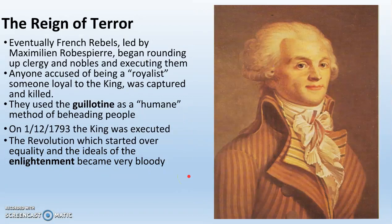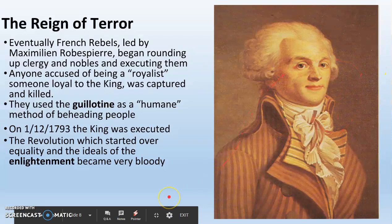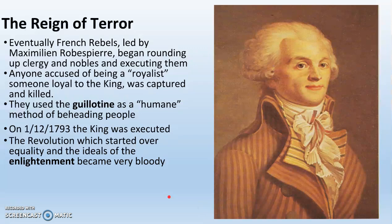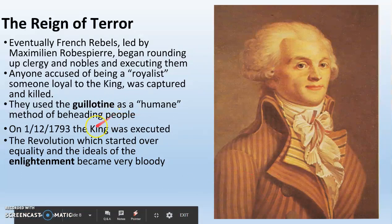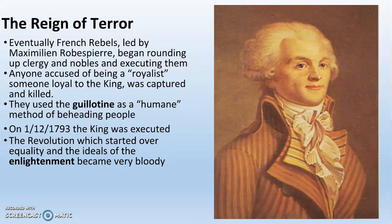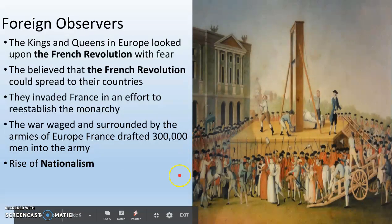This leads us to the Reign of Terror. These French rebels, led by the bourgeoisie, start following a man named Maximilien Robespierre. Robespierre is afraid the king will reestablish himself and begins the Reign of Terror — rounding up nobles and anyone loyal to the king, known as royalists, and executing them. They use a device called the guillotine to behead people while they are alive: they march them up, drop the blade, and it cuts off their head. They kill lots and lots of people accused of being royalists. On January 12th, 1793, the king himself, Louis XVI, is beheaded by Robespierre during the Reign of Terror. The revolution, which started over equality and the ideals of the Enlightenment, became very, very bloody.